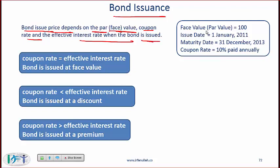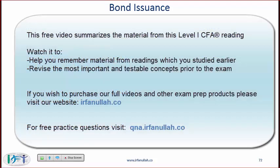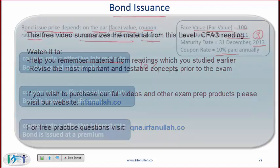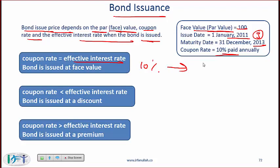If the face value, which is synonymous with par value, is 100, the issue date is 2011, and the maturity date is 2013 — so three years — and the coupon rate is 10% annually, and the effective interest rate, which is the rate that investors demand when the bond is issued, is also 10%, then the bond will be issued at par. So the issue price will also be 100.